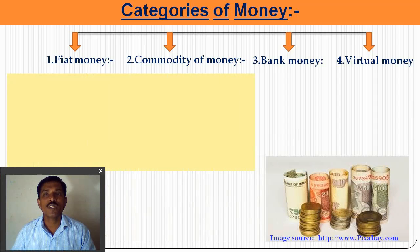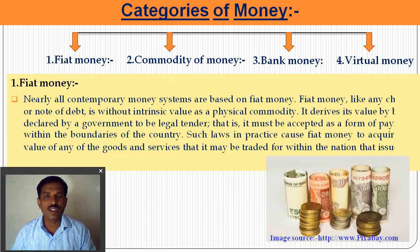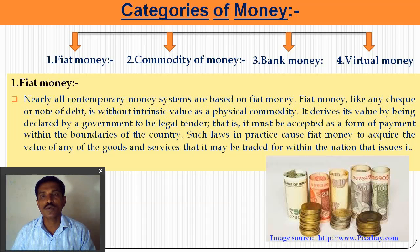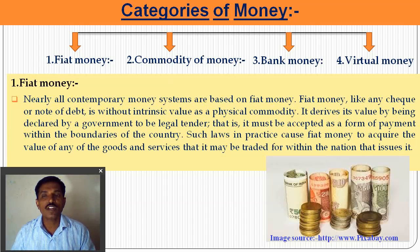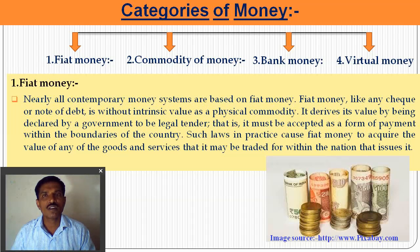What is fiat money or faith money? Whenever the government gives backing to any piece of paper or metal, it is called fiat money. Nearly all contemporary money systems are based on fiat money — currency or notes without the intrinsic value of a physical commodity. It derives its value by being declared by the government as legal tender. In India, we use rupees and coins which have government backing. Such money backed by law is called fiat money. Its value is measured by the goods and services it can purchase within the nation that issues it.